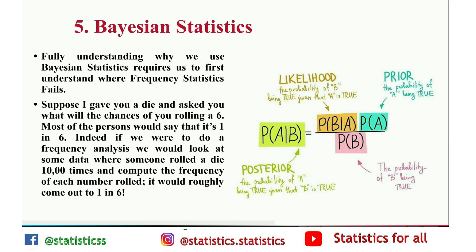Suppose I gave you a die and asked what are the chances of rolling a six. Most people will say one in six. Indeed, if we were to do a frequency analysis, we would add some data where someone rolled a die ten thousand to twenty thousand times and compute the frequency of each roll — it would roughly come out to one in six. Bayes' theorem plays a vital role in the field of data science.